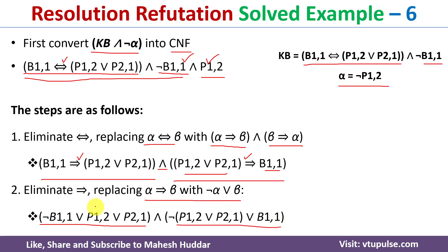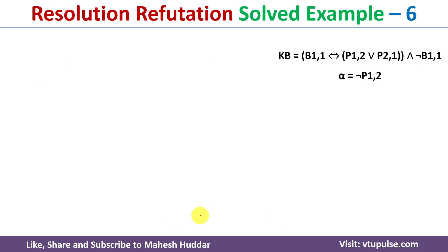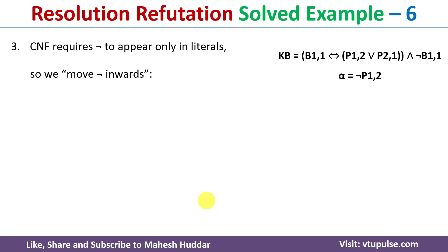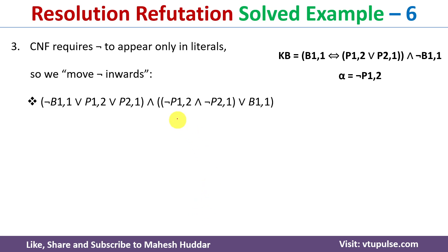The first clause is fine — each literal is connected by OR. But in the second clause, we have a negation outside a compound statement, which is not allowed in CNF. We need to move the negation inside using De Morgan's law. Taking it inside, negation of (P1,2 or P2,1) becomes (negation of P1,2) AND (negation of P2,1).